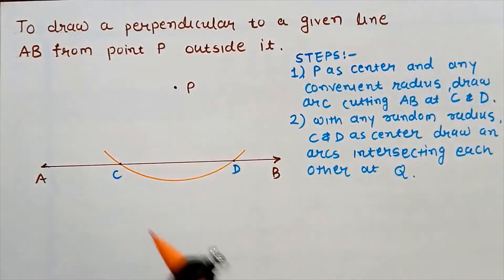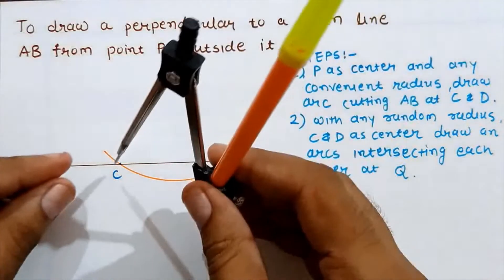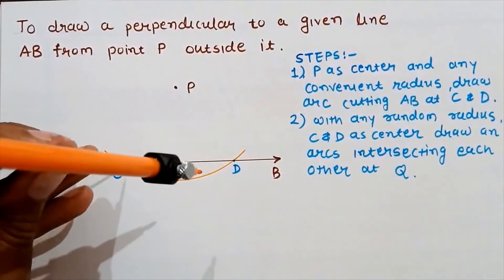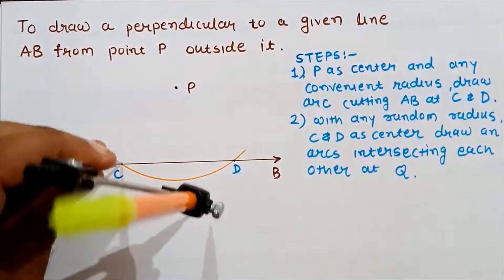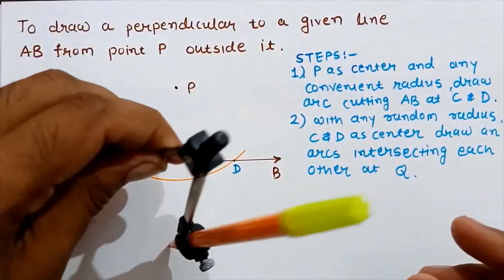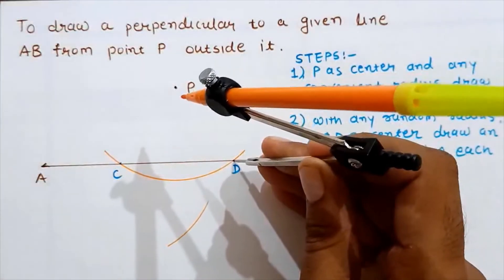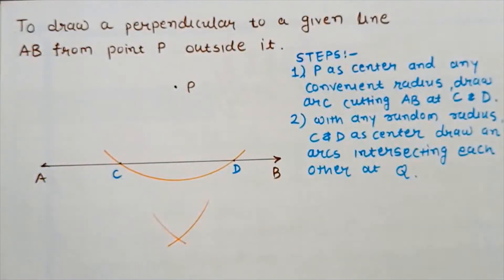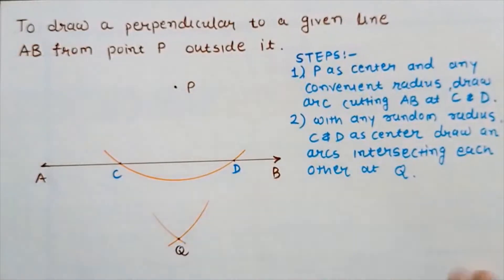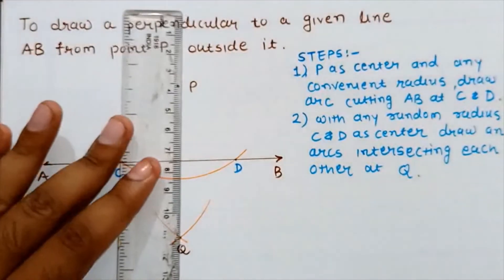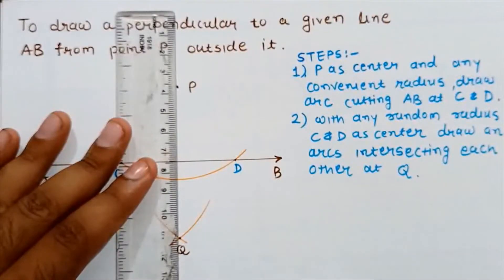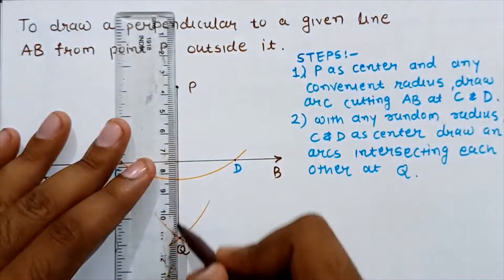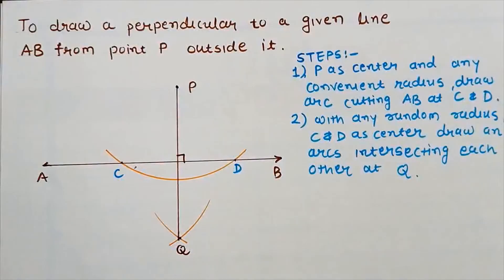We can also take the same radius. C as a center, draw an arc; similarly D as a center, draw an arc. The intersecting point is nothing but point Q. Join PQ — PQ is our required perpendicular.